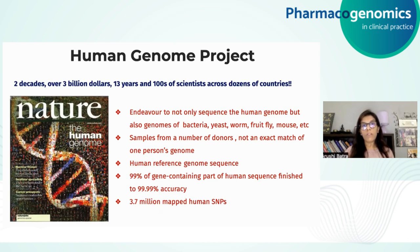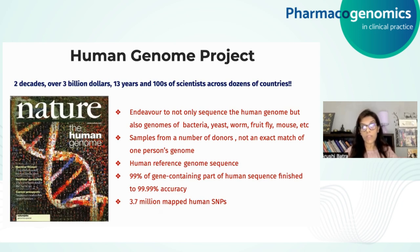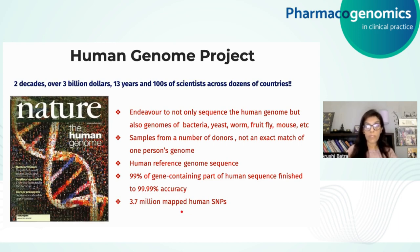The major landmark project was the Human Genome Project, which spanned over two decades with more than 3 billion dollars spent, 13 years, and hundreds of scientists across dozens of countries involved — to sequence not only the first human genome but also genomes of bacteria, yeast, worm, fruit fly, mouse, and others. The human genome project contains approximately 20,000 to 25,000 genes, was sequenced to 99.99% accuracy, was completed two years ahead of schedule, and resulted in identification of 3.7 million mapped human SNPs. Though it contained samples from a number of donors, it is not an exact match of one person's genome, even though a consensus human reference genome sequence is still used.